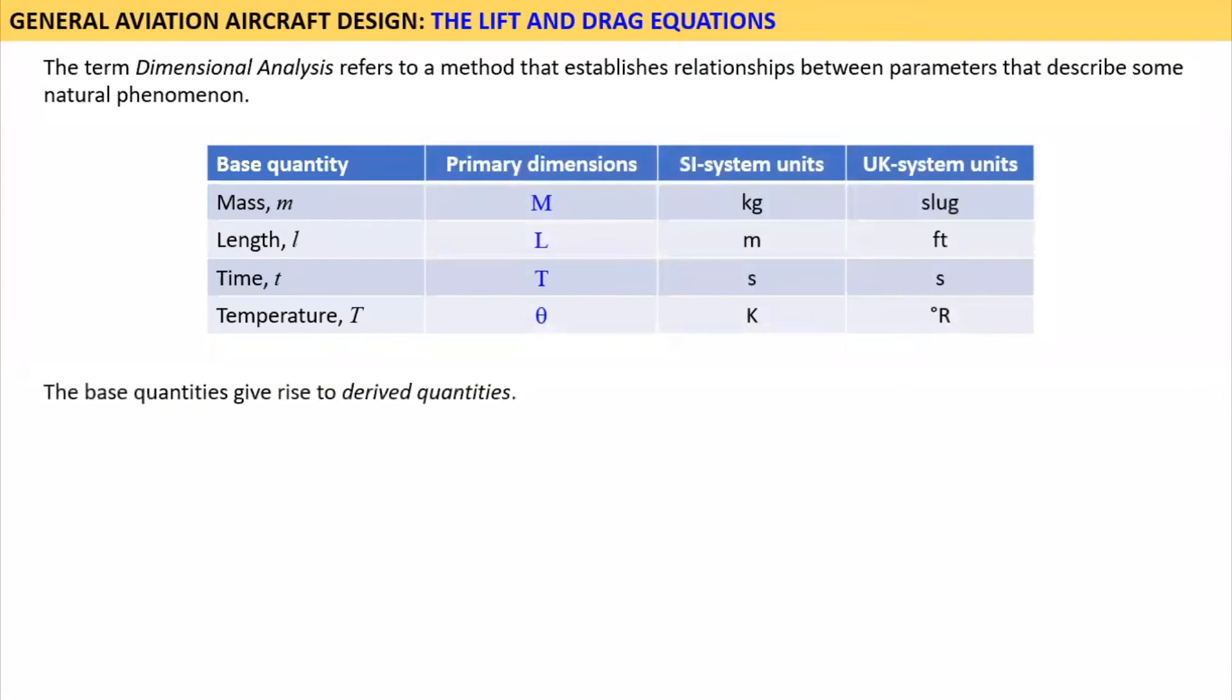The base quantities give rise to derived quantities. For instance, a force is defined using the familiar expression F equals MA, where M is mass and A is acceleration. Thus, the mass can be represented using the primary dimension M, whereas the derived quantity acceleration, which is in terms of length divided by time squared, is represented by L divided by T squared. Therefore, we can write the force using the primary dimensions as shown. In contrast, the derived quantity area, A, is represented by L squared.